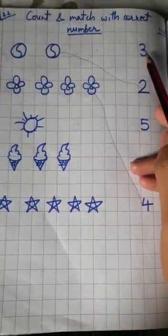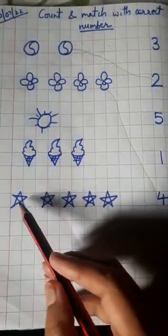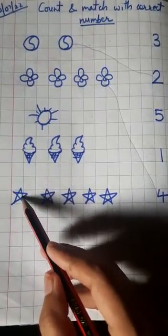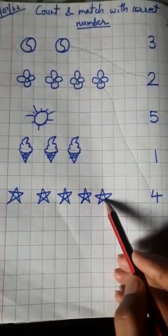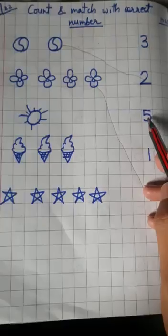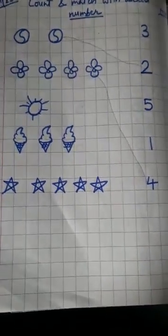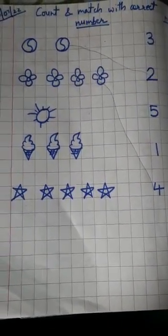Match it with number three. And next is stars. One, two, three, four, five - five stars. So match it with number five. Like this, you have to complete this page. Bye bye.